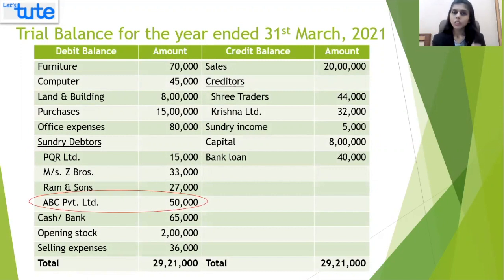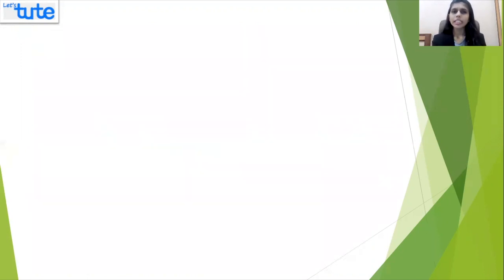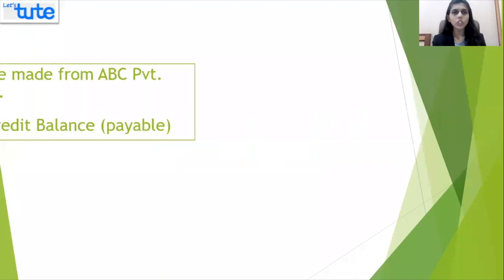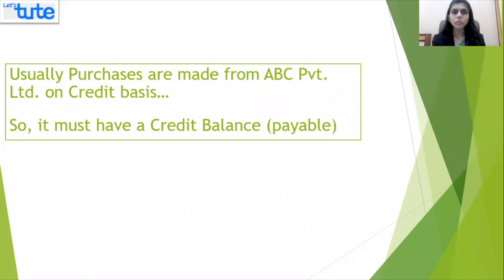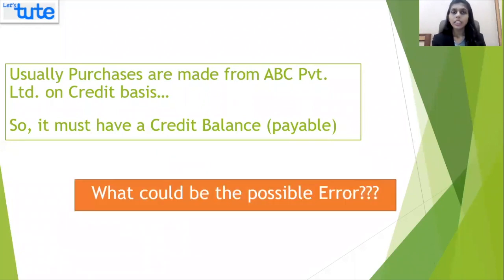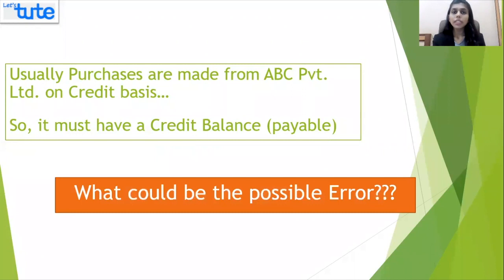Now you remember that this party is your supplier and you generally purchase goods from ABC Private Limited on a credit basis. There is always some amount payable to this party. Then how come it has a debit balance?